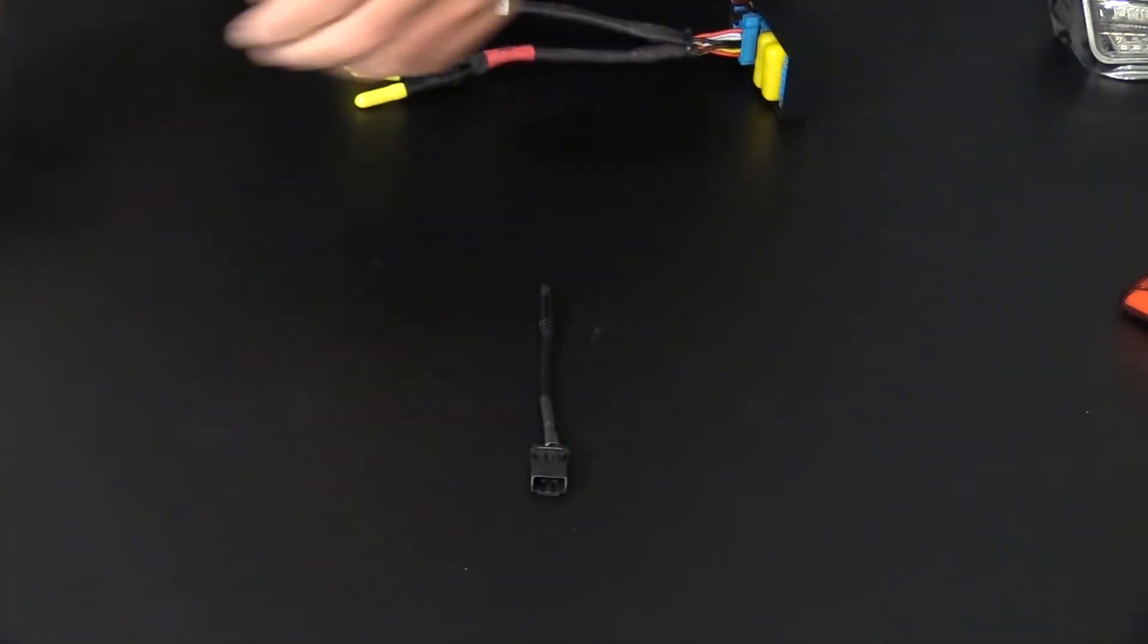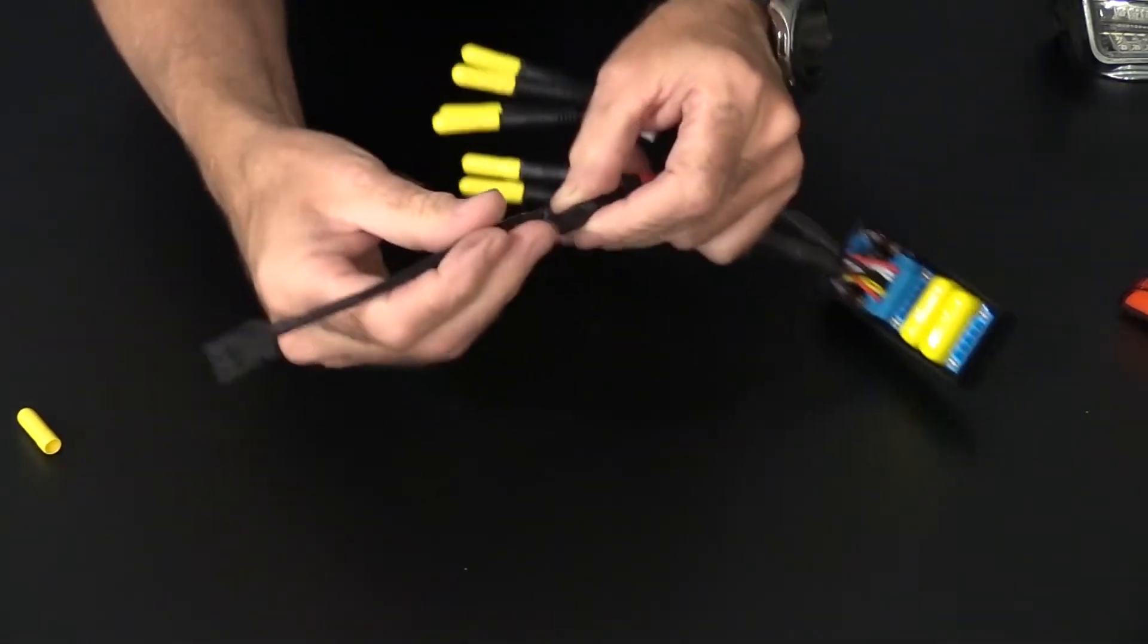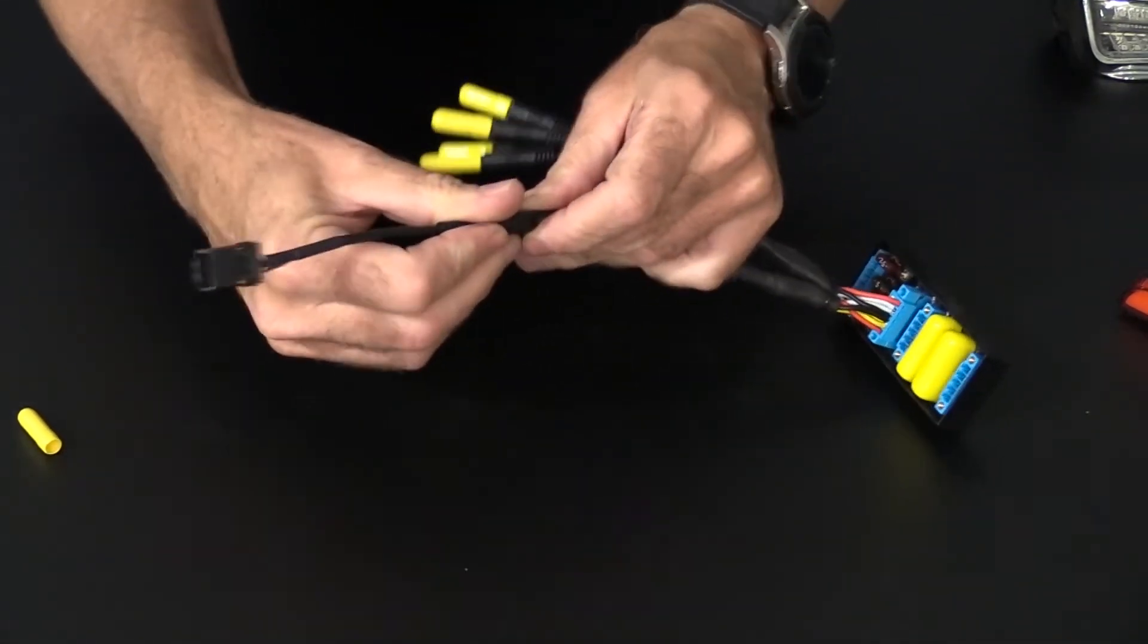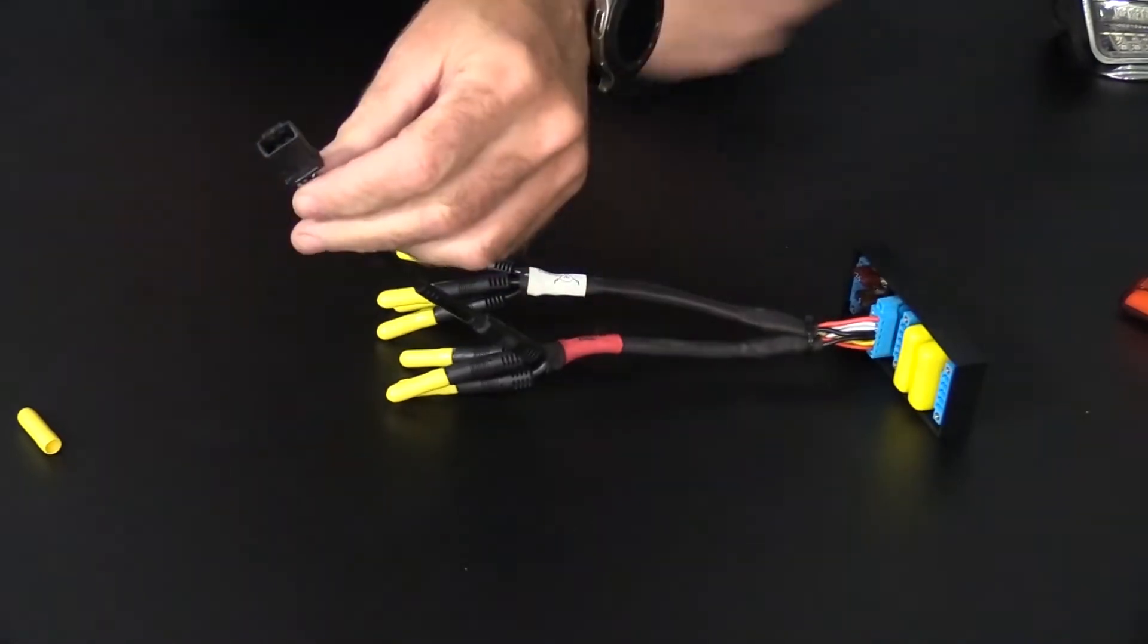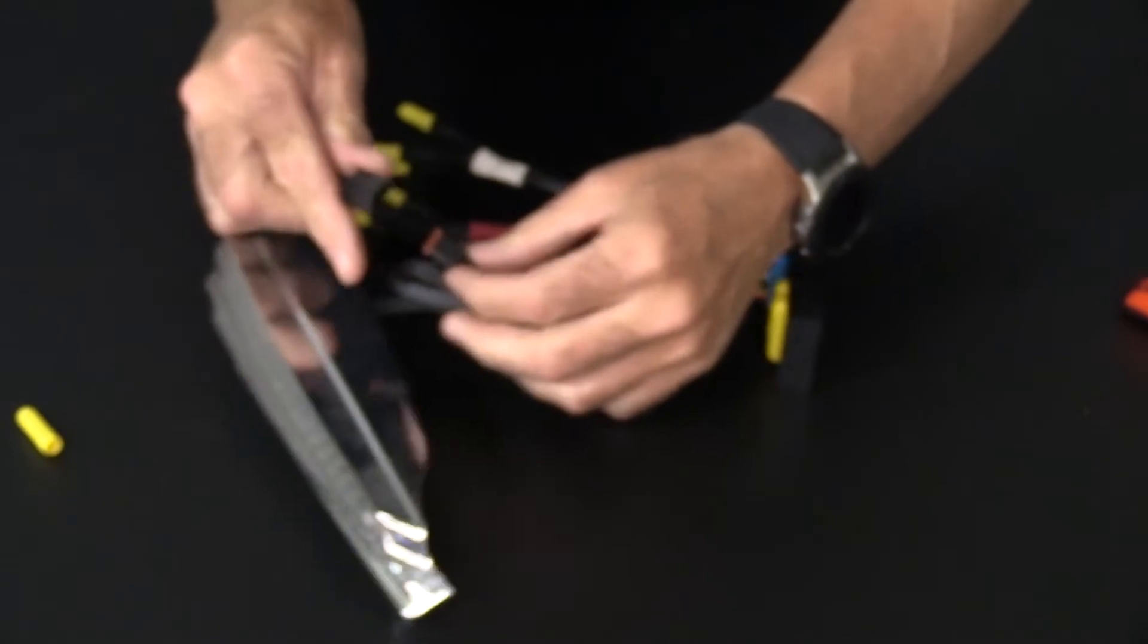No cutting or splicing required. This is the Gold Strike adapter. Note that the Kuryakyn and Pathfinder use the same connector, but they are pinned out differently and are not interchangeable. After connecting the adapter, plug in your light.